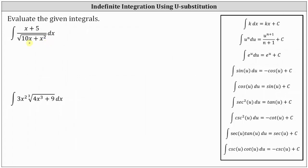Since the derivative of a degree two polynomial is equal to a degree one polynomial, we will let u equal the radicand of 10x plus x squared. Notice if u equals 10x plus x squared, the denominator is now the square root of u, which can be written as u to the power of one half. Also notice we're left with the quantity x plus five times dx.